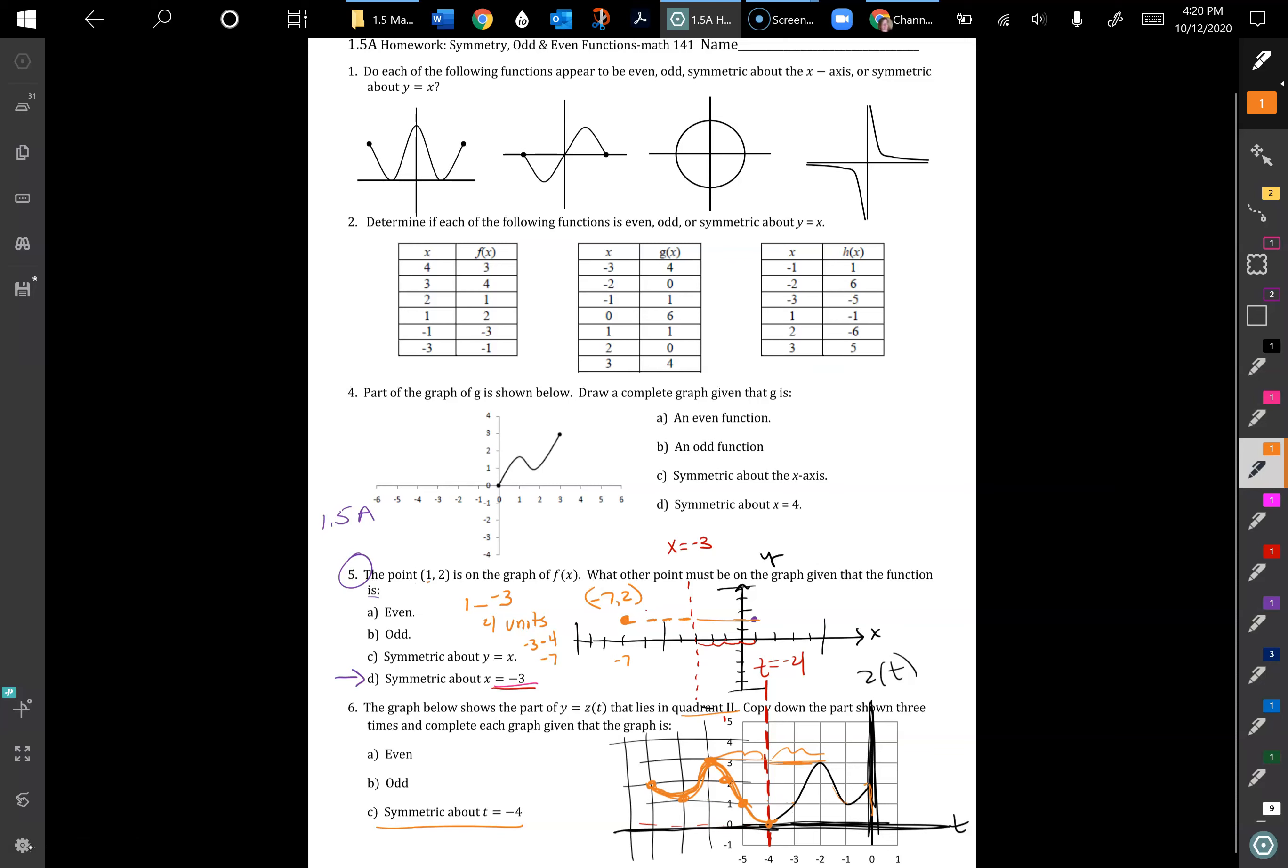Remember that these are vertical lines when it's the x component or the input equal to something. If it's an output equal to something, it's a horizontal line. So I hope that helps, and let me know if you need more details or have any questions about that.